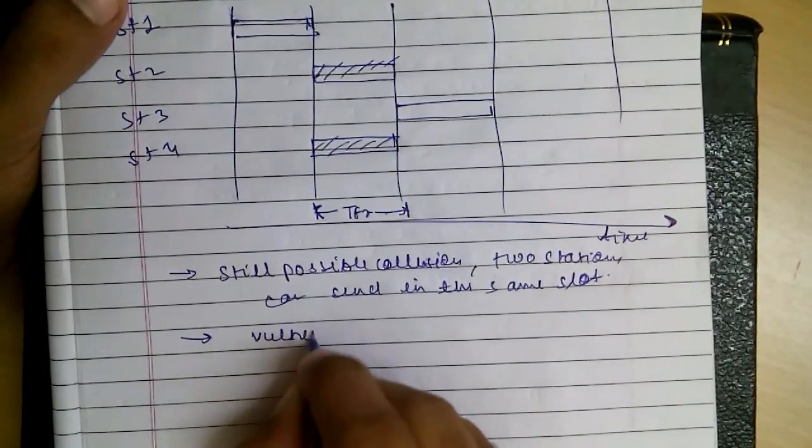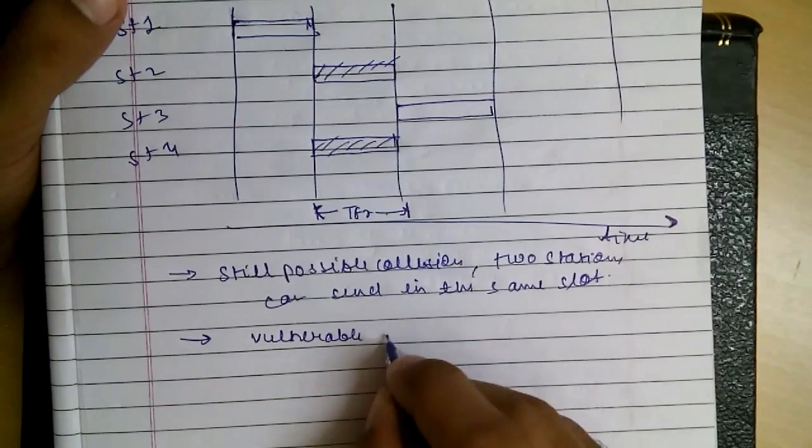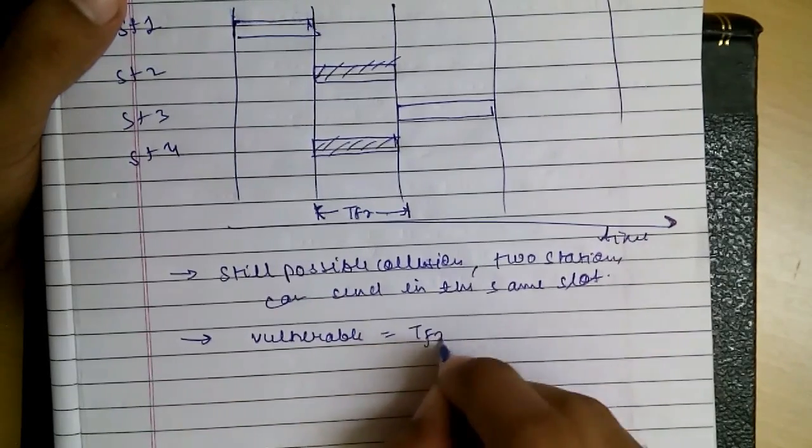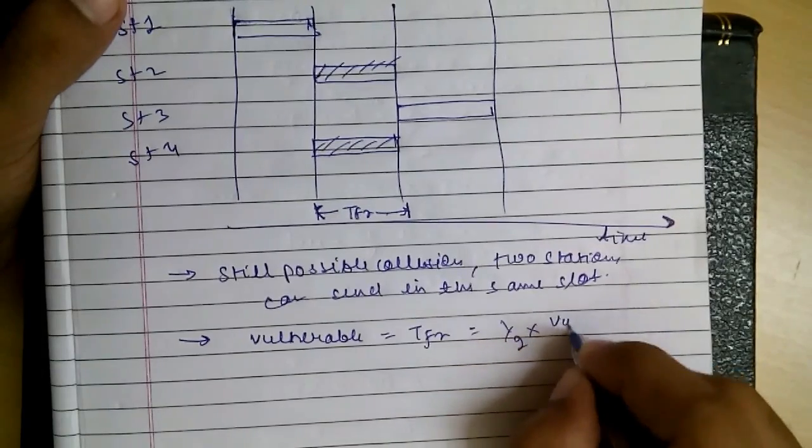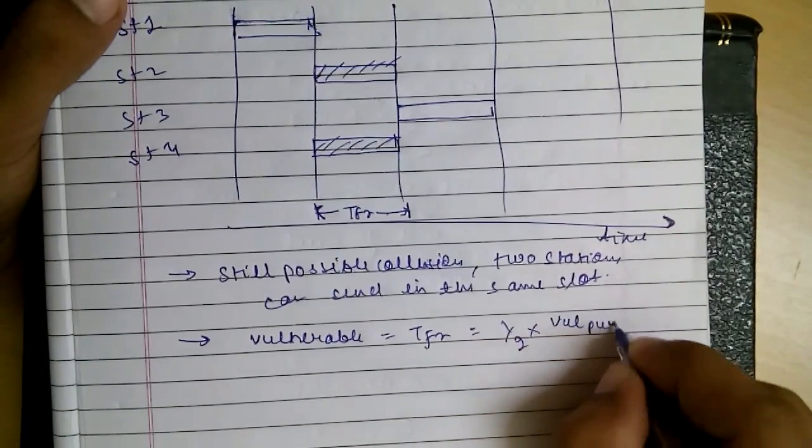So vulnerable time is equal to TFR, which is equal to half times the vulnerable time of pure ALOHA.